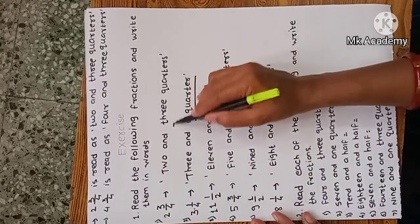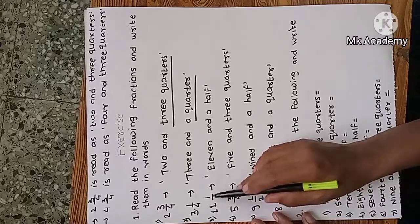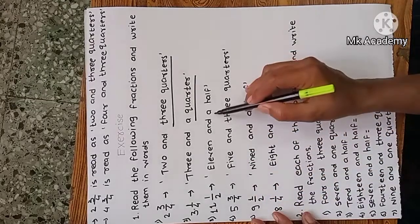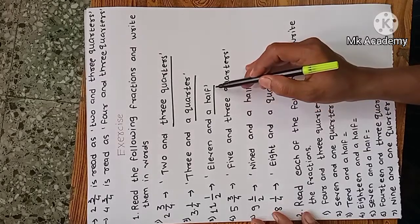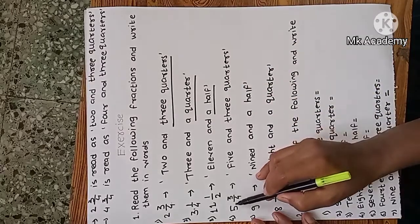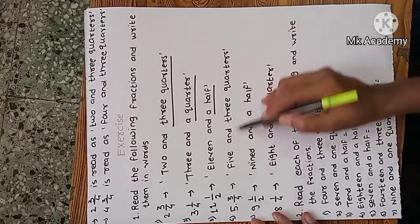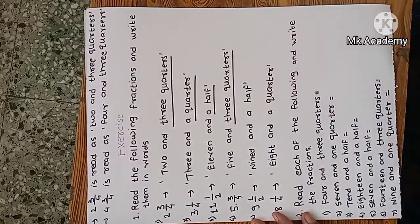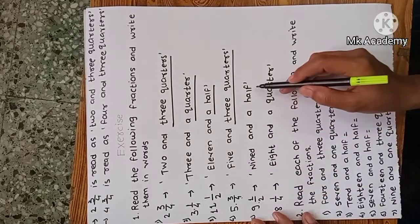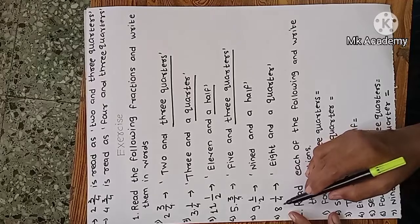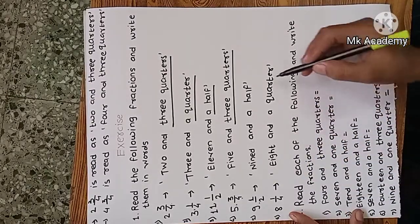Here three-by-four means three quarters. Next, eleven and one-by-two is eleven and a half — one-by-two means a half. Five and three-by-four is five and three quarters. Nine and one-by-two is nine and a half. Eight and one-by-four is eight and a quarter.